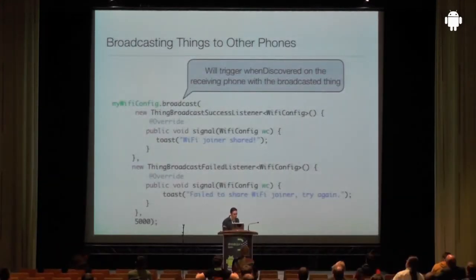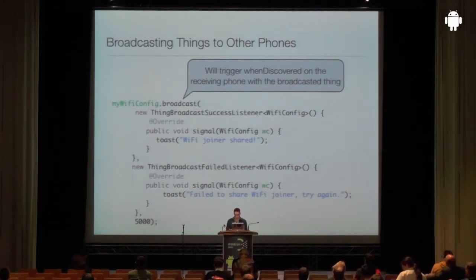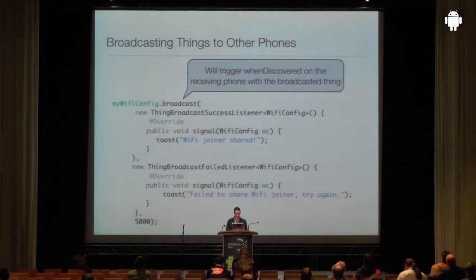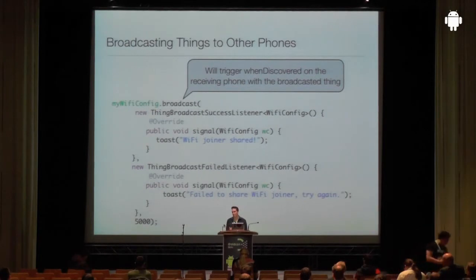One last method on things is broadcast(), which shares the thing using the Android Beam API in a peer-to-peer fashion with another phone. Like the read/write API, Beam has the same problems — blocking, slow — so broadcast() takes two listeners for success and failure. On the receiving phone, whenDiscovered is called with the broadcast thing, except that this thing is not uniquely associated with a tag since it didn't originate from one. So you cannot call saveAsync on it, but you could use it to initialize an empty record.